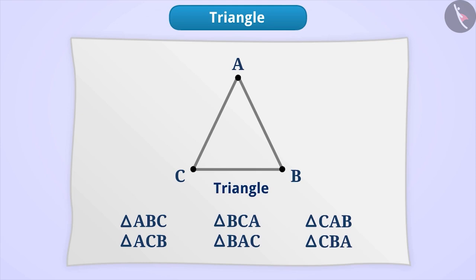As you know, there are three sides to a triangle. Here the arms or sides are AB, BC and CA.